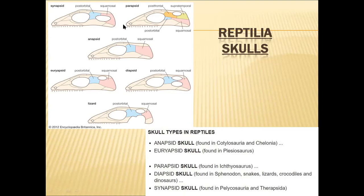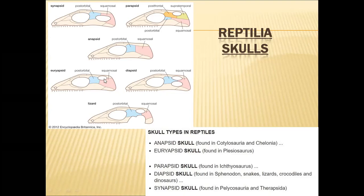Based on the temporal fenestrae, the reptilian skulls have been classified into synapsida, parapsida, anapsida, euryapsida, and diapsida skulls. The anapsida skull is considered the primitive skull of the primitive reptiles, where the temporal region has no fenestrae or holes. Among the remaining four types, one type has two pairs of fenestrae, and the other three have only one pair of fenestrae.